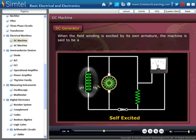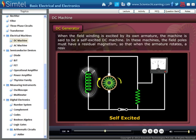Now when the field winding is excited by its own armature, the machine is said to be a self-excited DC machine. In these machines, the field poles must have a residual magnetism so that when the armature rotates, a residual voltage appears across the brushes. This residual voltage should establish a current in the field winding so as to reinforce the residual flux. A self-excited DC machine can be subdivided as follows.